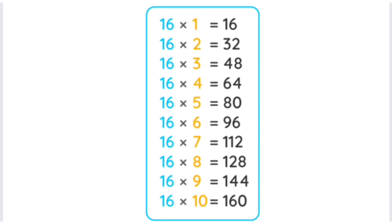16 ones are 16, 16 twos are 32, 16 threes are 48, 16 fours are 64, 16 fives are 80, 16 sixes are 96, 16 sevens are 112, 16 eights are 128, 16 nines are 144, 16 tens are 160.